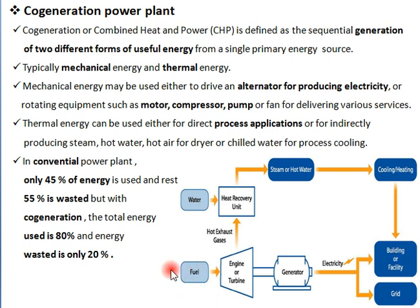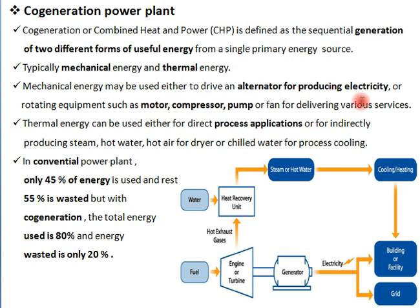This steam or hot water can be used for different purposes like cooling and heating in buildings or in process industries. From a single primary energy source, we can use energy in different ways — producing both mechanical energy and thermal energy. Mechanical energy is used to produce electricity via motors, compressors, and pumps.